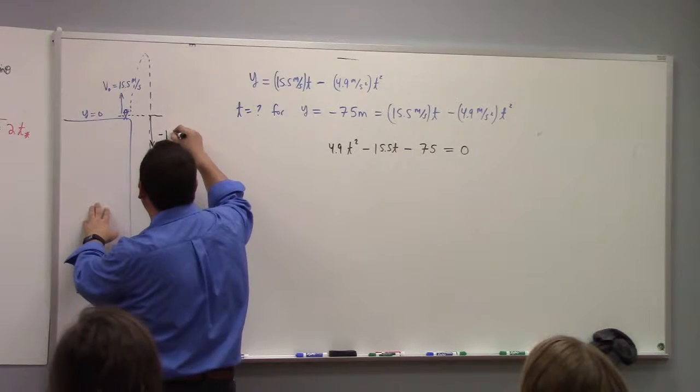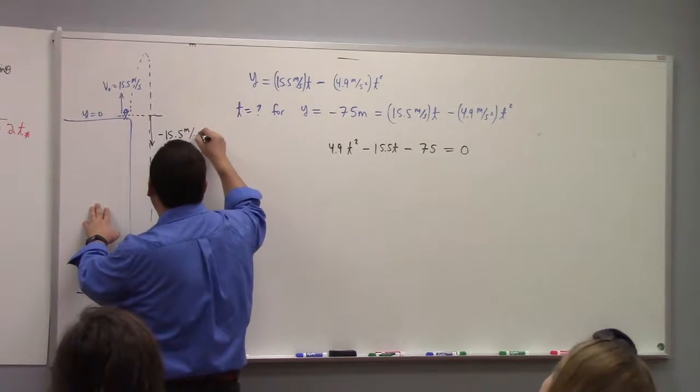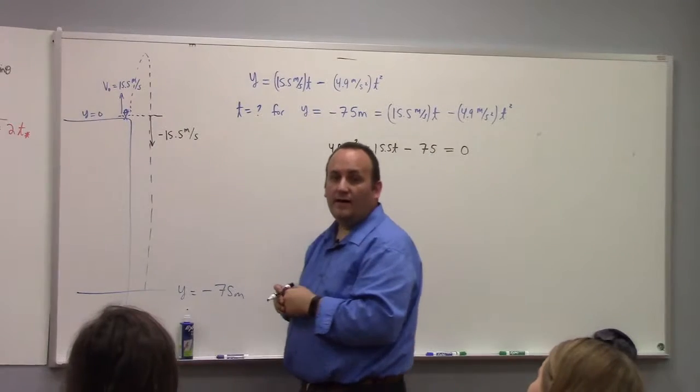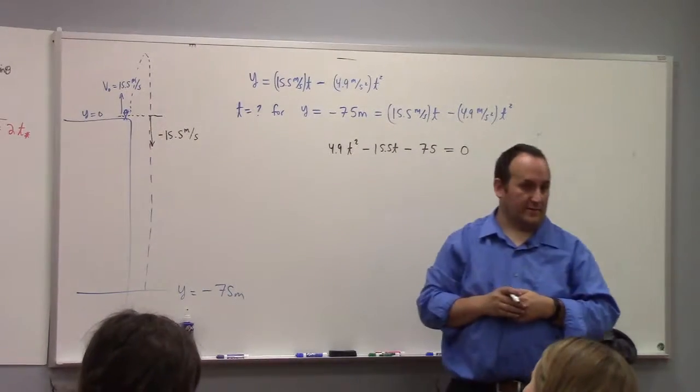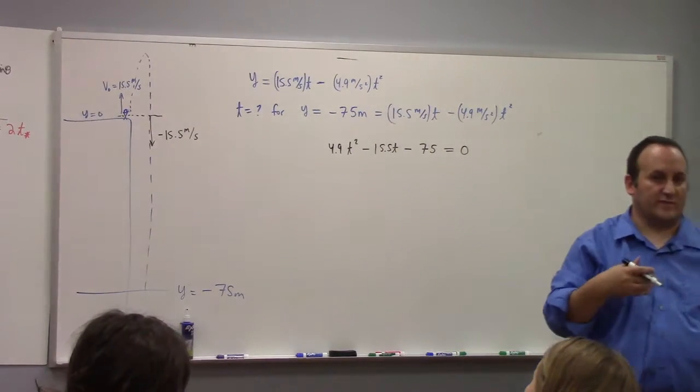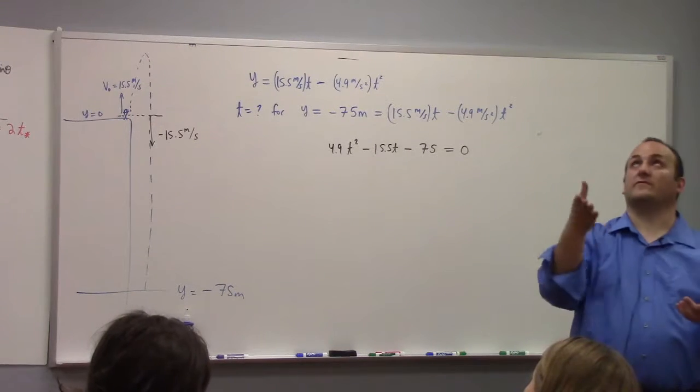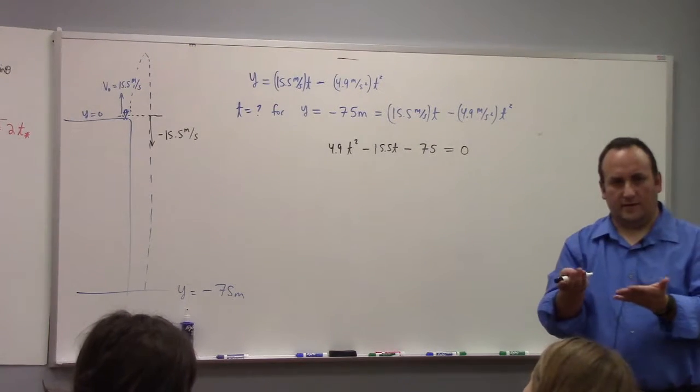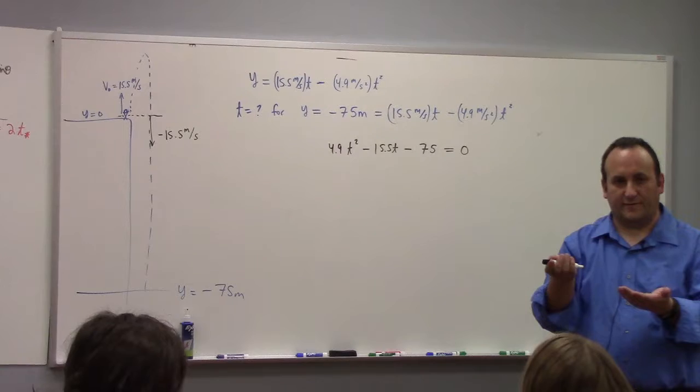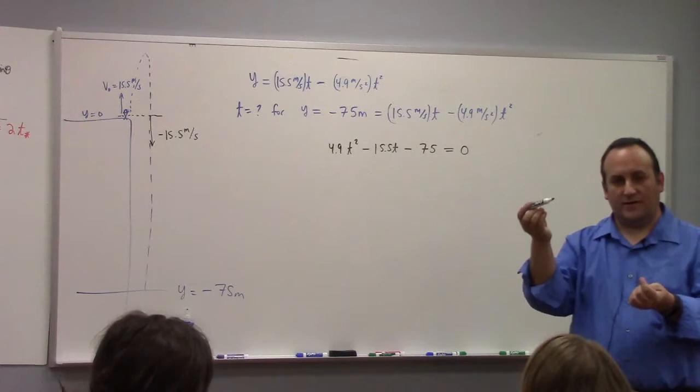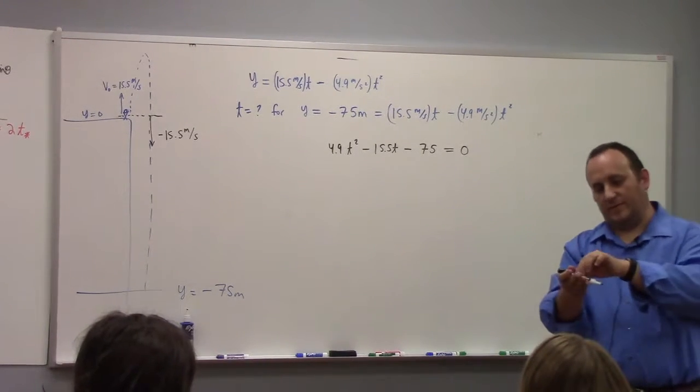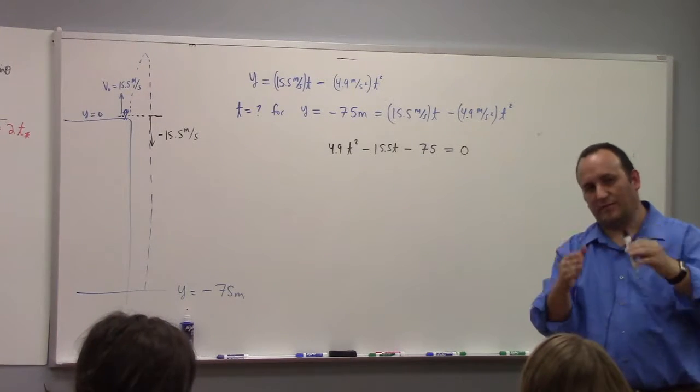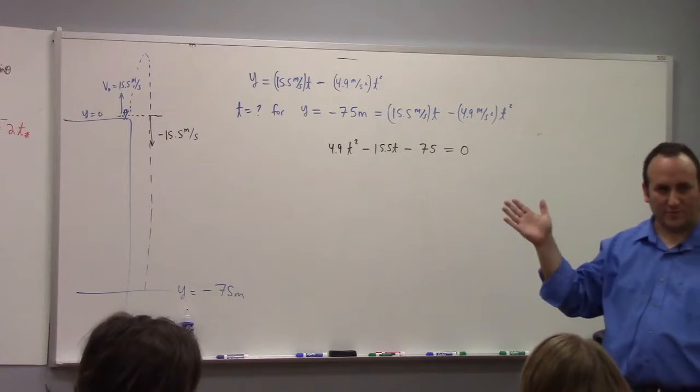Then it would have minus 15.5 meters per second downward. I know this from things we haven't talked about yet, or you could just know it from symmetry, right? Like if I throw this up and then when I come back down, it should be coming down with the same speed it left my hand, ignoring friction and the usual disclaimers.